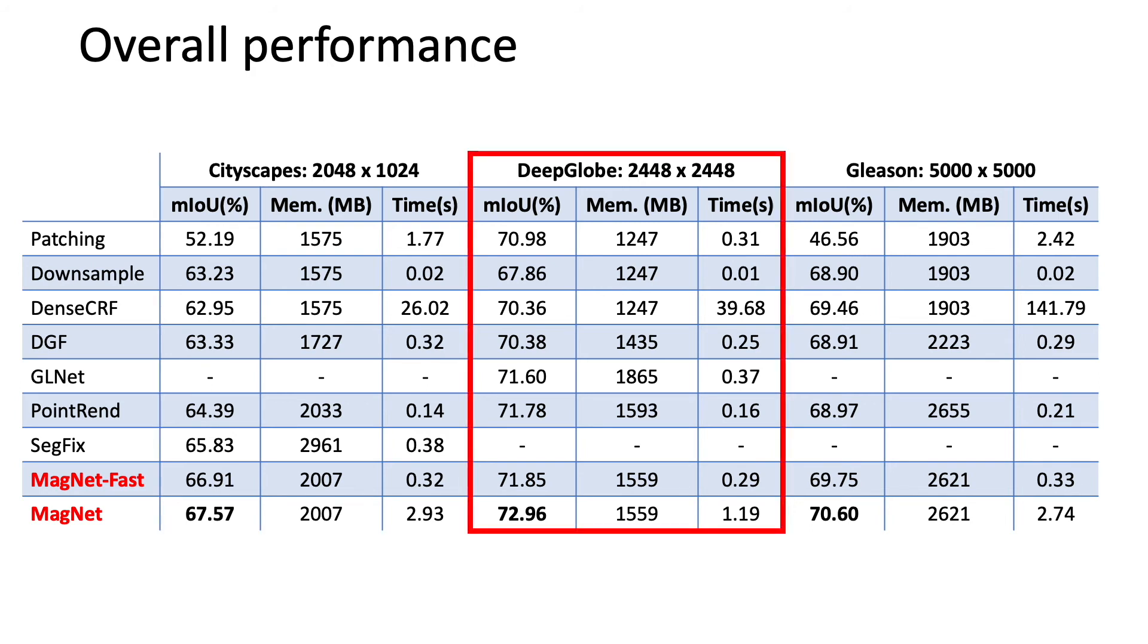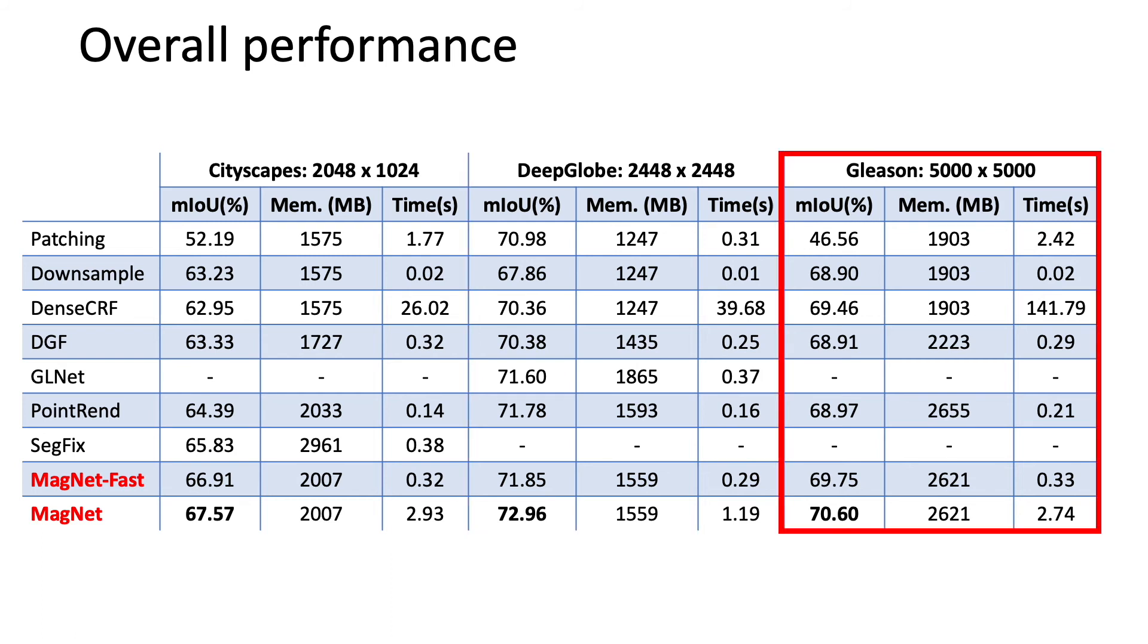In the DeepGlobe dataset, both Magnet and Magnet Fast yield better mean intersection over union than GLNet and PointRend. In the Gleason dataset, Dense CRF performs well on this dataset, but the inference speed is incredibly slow.